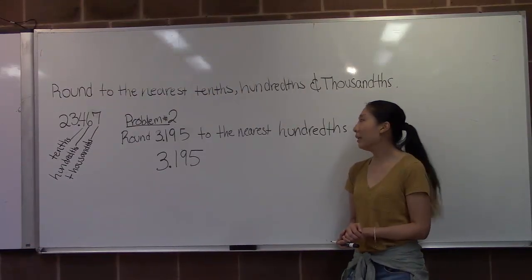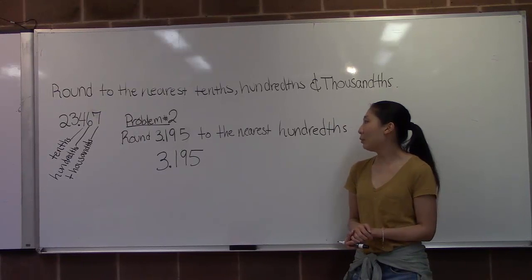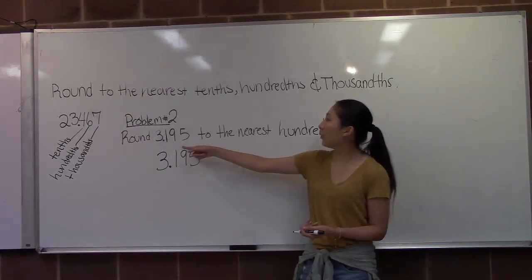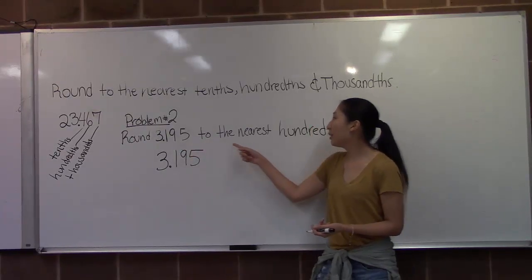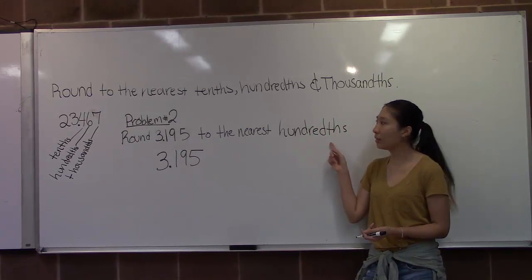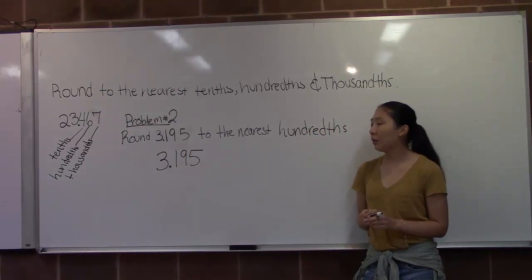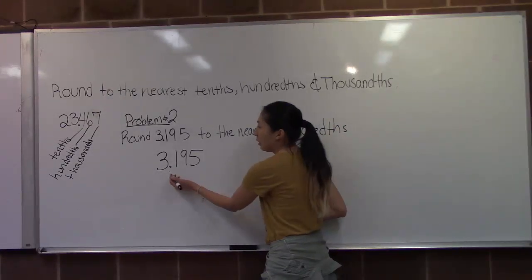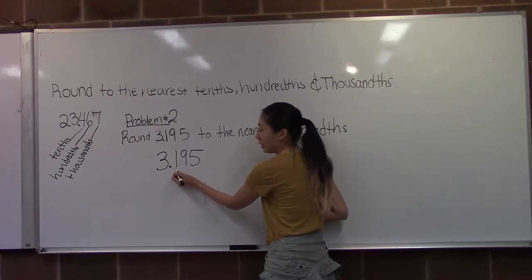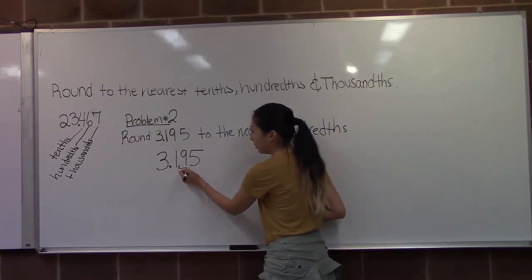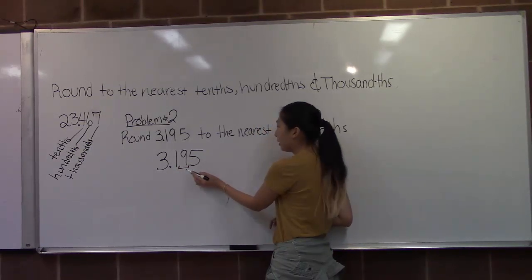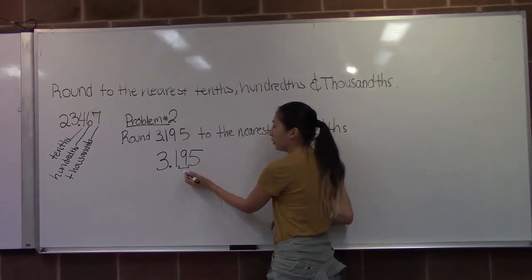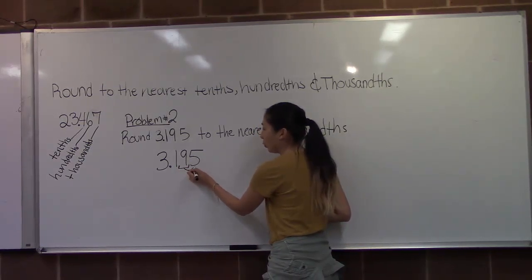We'll be doing problem number 2. This problem will be rounding 3.195 to the nearest hundredths. In order to do this problem, we'll need to locate the hundredths place. So in 3.195, 1 will be the tenths place and 9 will be the hundredths place. Once we locate the hundredths place, we'll go one decimal place to the right, which is a 5.